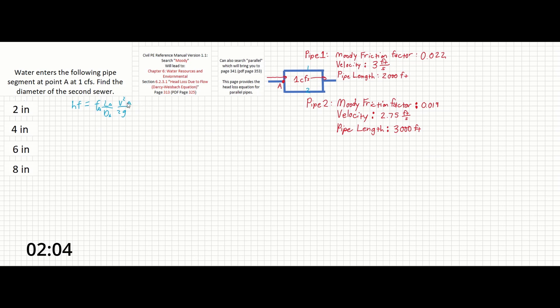velocity a over 2g equals fb, we can think of a and b in terms of 1 and 2 here, equals lb over db times vb squared over 2g. So let's start by filling out this equation.